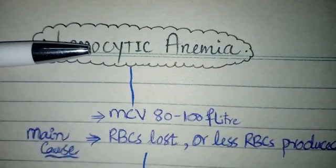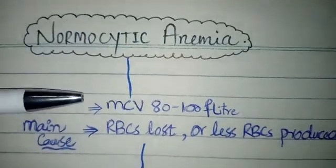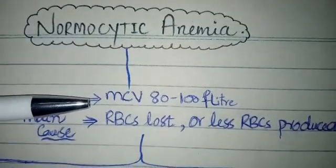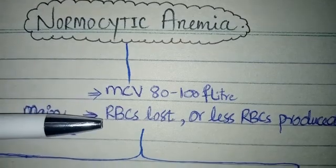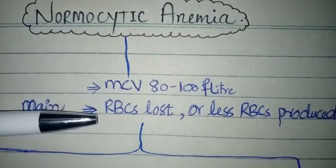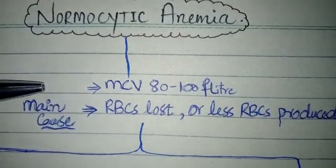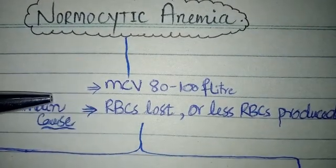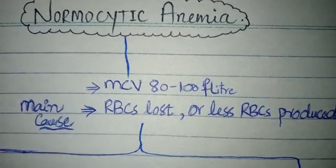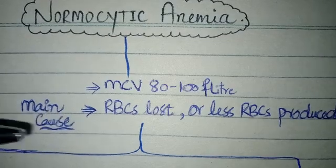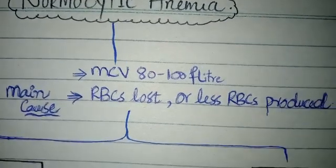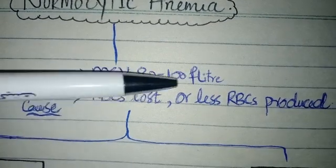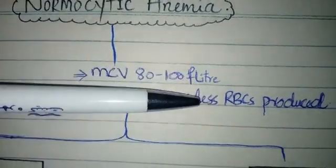Normocytic anemia occurs when MCV is 80 to 100 femtolitres. The main causes of normocytic anemia can be RBCs if they are lost or if less RBCs are produced.